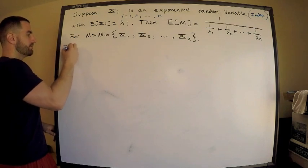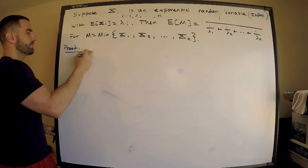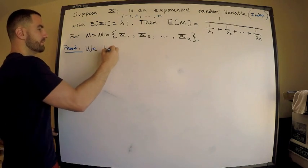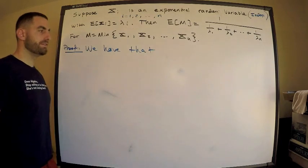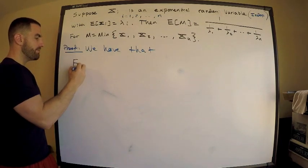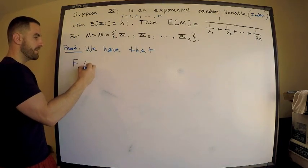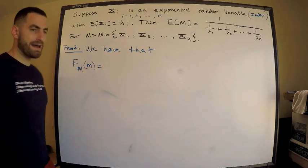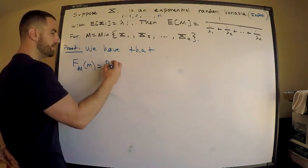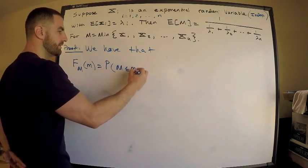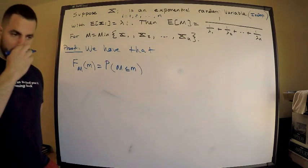Proof. We have that the CDF of the min, capital F_M of m, by definition this is equal to the probability that M is less than or equal to m.